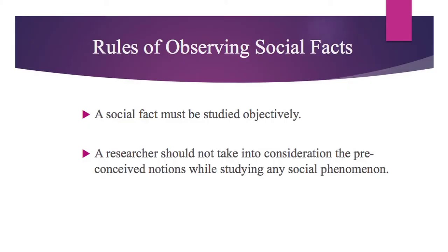Now let us try to discuss the rules of observing a social fact. While studying any social fact, one needs to observe it objectively and without any preconception. For example, if a natural scientist studies a stone or the ozone layer, he or she will try to understand it by examining the scientific or natural properties of that object. Similarly, a social scientist while studying a social phenomenon needs to undertake such an objective attitude.